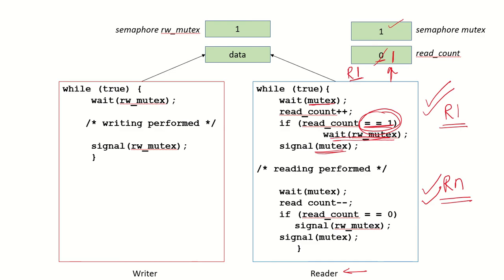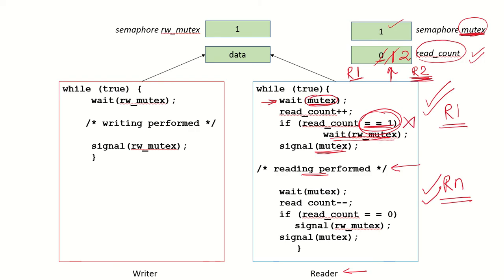Then reader 1 performs its reading. Now let's say it is still reading and reader 2 also wants to access this data. Reader 2 will wait on the mutex semaphore because it controls the increment of read_count. So reader 2 gets control of mutex, increments read_count to 2. Since read_count is not 1, it does not need to wait on read_write_mutex — that step is skipped. Then it releases the mutex semaphore and also performs its reading.